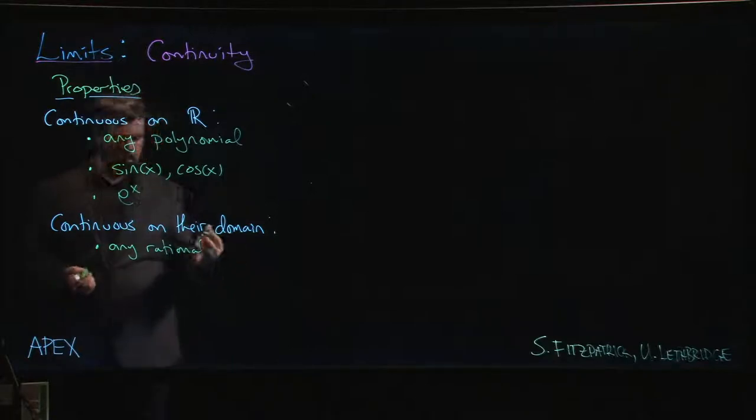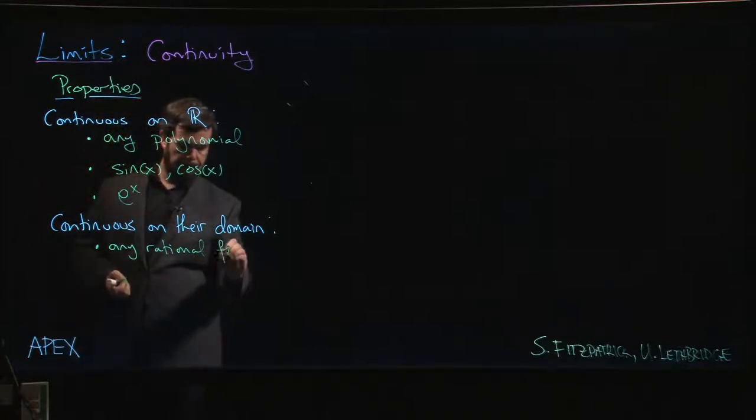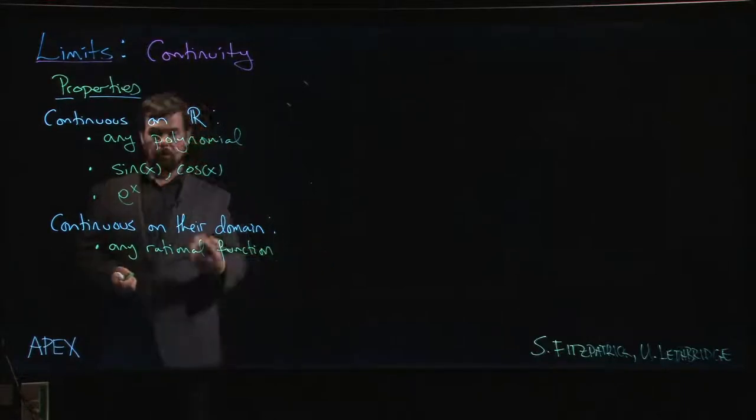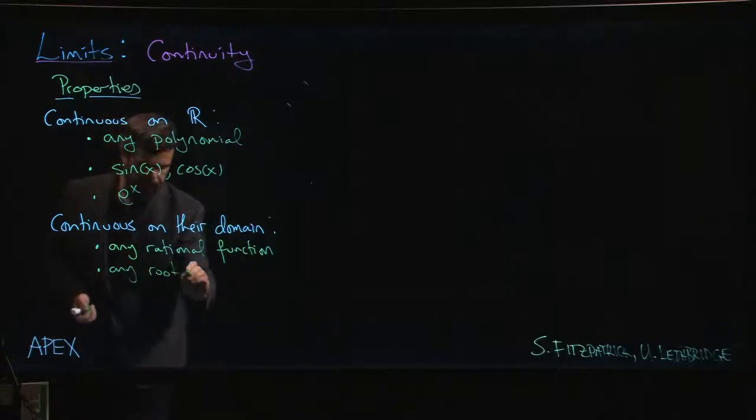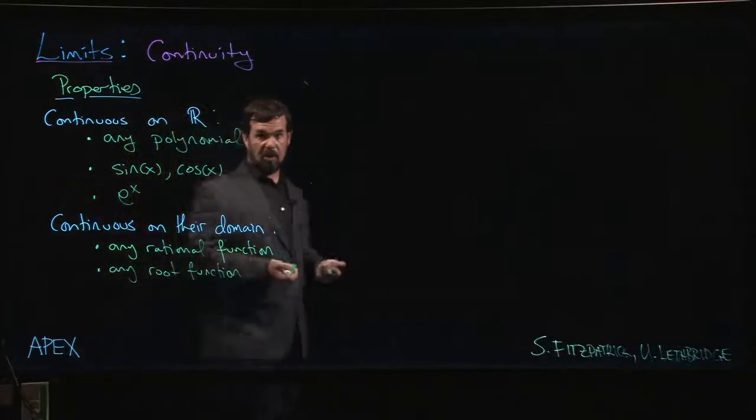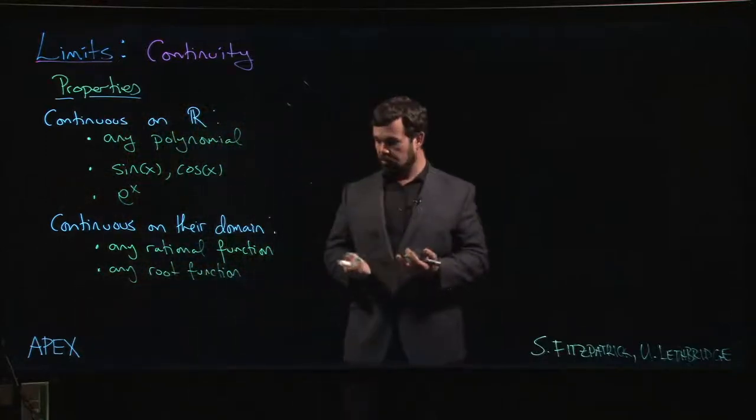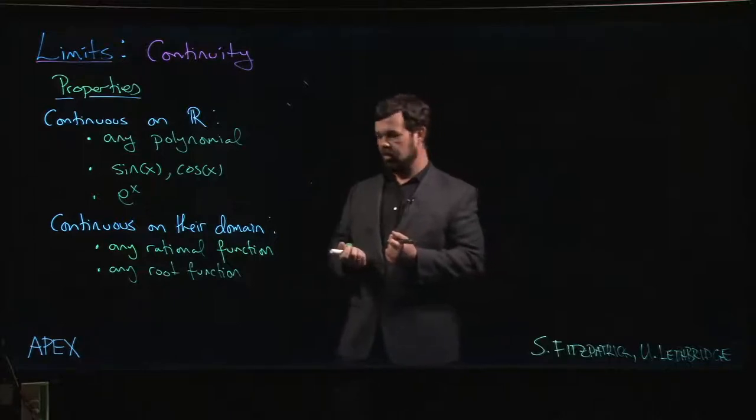So any ratio of two polynomials is going to be continuous everywhere except for zeros in the denominator. Any root function - as usual you got to stay away from negative values under even roots - otherwise going to be continuous.